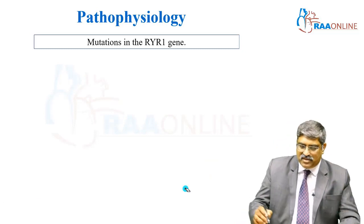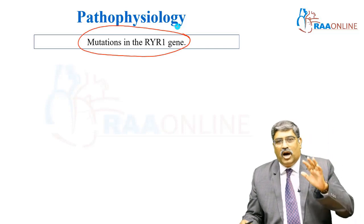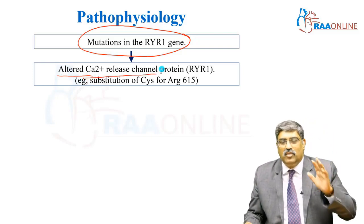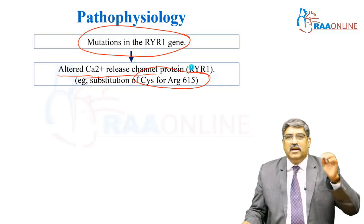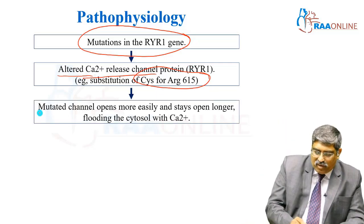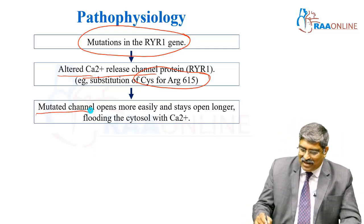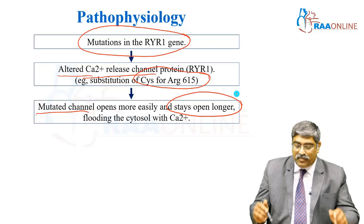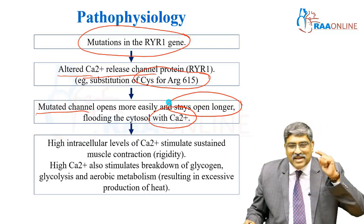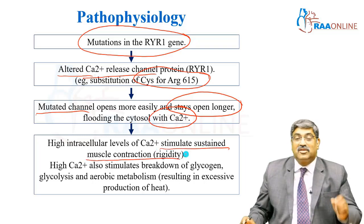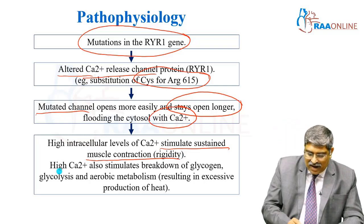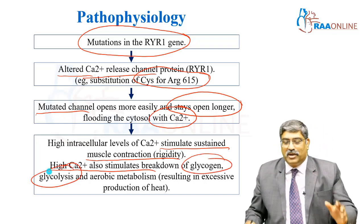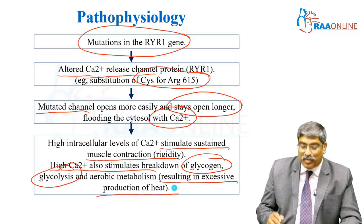At the cellular level, why does this happen? There is a mutation in the RYR1 gene. This causes alteration in the calcium release channel protein — there is a substitution of cysteine for arginine at position 615. Therefore, this mutated channel opens more easily and also stays open longer, flooding the cytoplasm with a large amount of calcium. This high calcium stimulates sustained muscular contraction, which becomes very rigid. High calcium also stimulates breakdown of glycogen, causes glycolysis and aerobic metabolism, resulting in excessive production of heat.